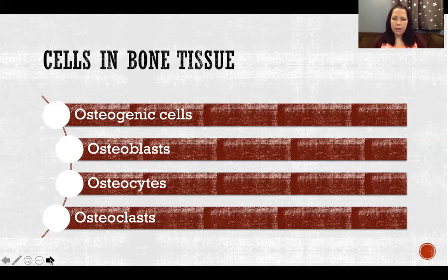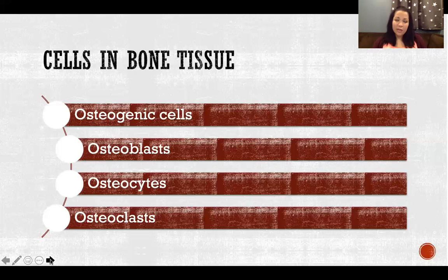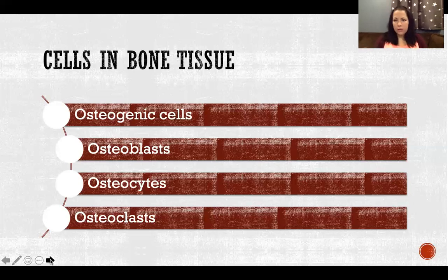At that point, the osteoblasts have fully matured and are now called osteocytes — bone cells. They were osteoblasts while building until they'd painted themselves into a corner. Now all they really have to do is maintain the bone tissue they built around them. So osteogenic cells divide and create osteoblasts, and osteoblasts mature and become osteocytes.